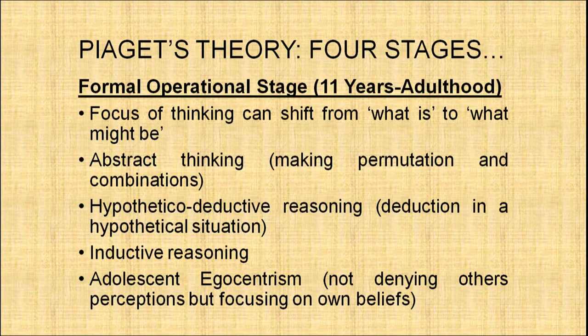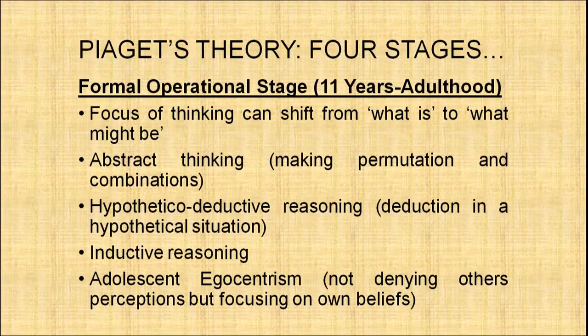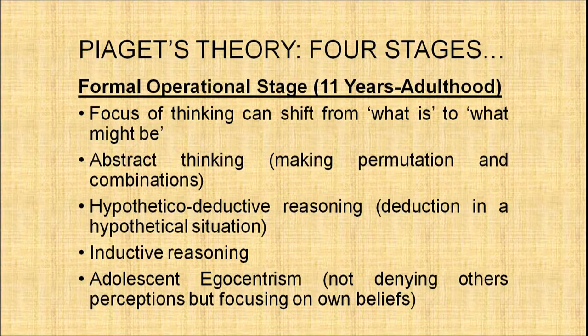The fourth and highest stage is the formal operational stage (11 years onward). Here, the focus of thinking can shift from 'what is' to 'what might be' — abstract thinking becomes possible. The child can make different permutations and combinations mentally without physical presence of objects. Hypothetical-deductive reasoning and inductive reasoning are present. Adolescent egocentrism also appears: unlike earlier egocentrism, the adolescent does not deny others' perceptions but focuses strongly on their own beliefs.